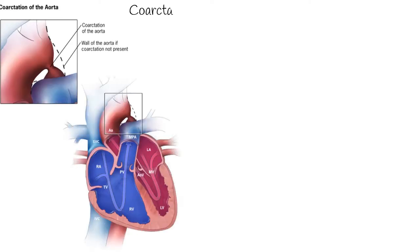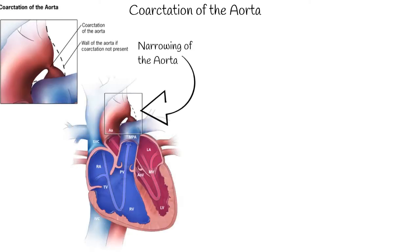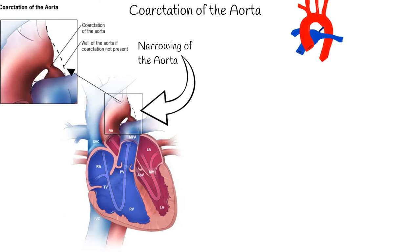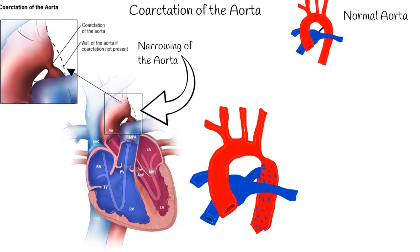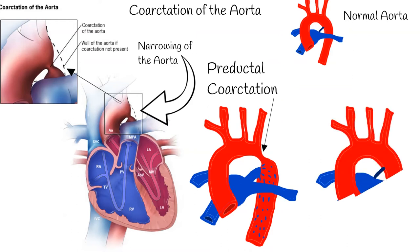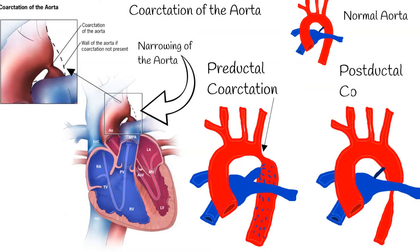Coarctation of the aorta is a congenital heart disease. It means narrowing of the aorta. Narrowing can be before the ductus arteriosus, which is called preductal coarctation, and after the ductus, called postductal coarctation.